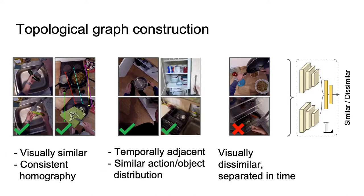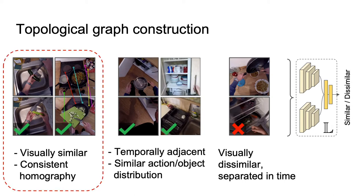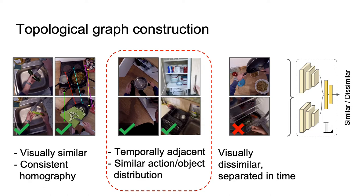To construct this graph, we first train a localization network to classify if two frames belong to the same zone or not. Apart from visual and geometric cues, we leverage cues from human behavior. Contiguous frames during the course of an interaction, temporally adjacent frames, and frames of functionally similar locations are matched, despite visual differences, to train a robust similarity network.